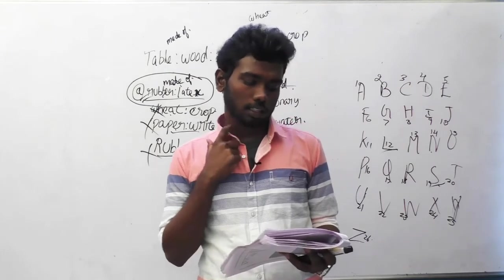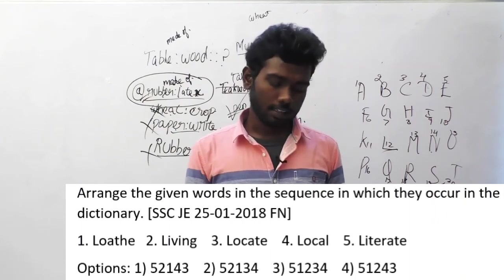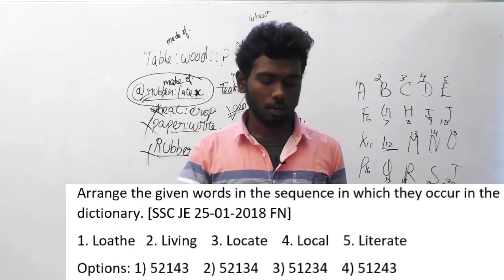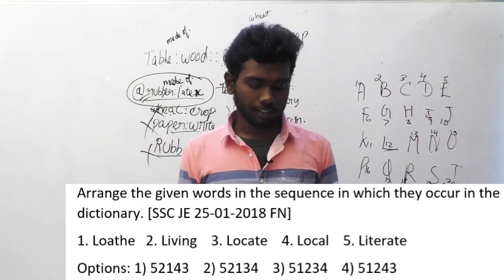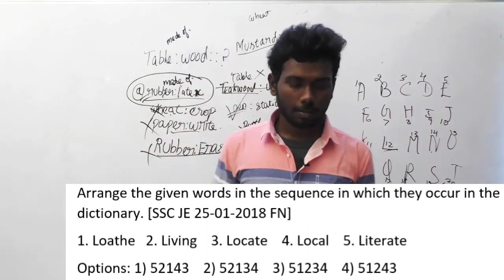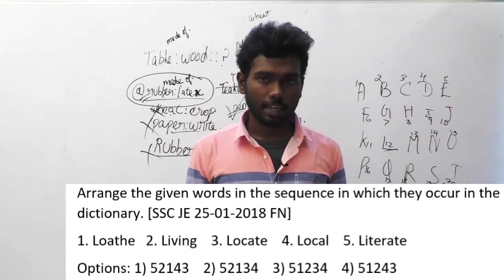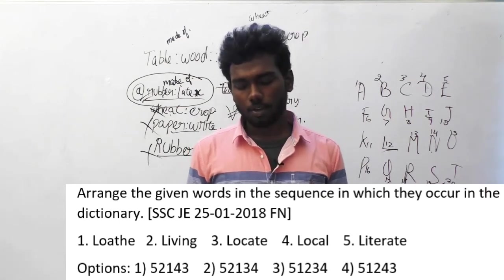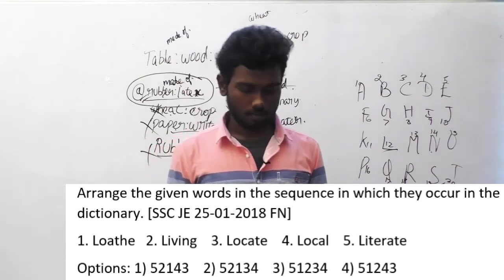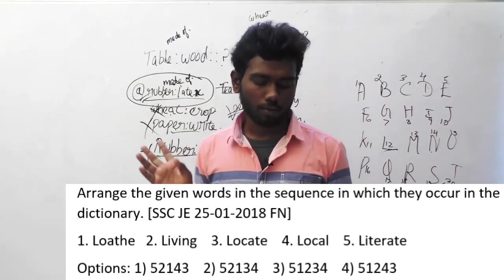Let us move on to question 136. Arrange the given words in the sequence in which they occur in the dictionary. This question is asked in SSC JE, 25th January 2018, forenoon session. The words are: loth, living, locate, local, literate. You can arrange them yourself — it is a very easy one. The answer is option A: 5, 2, 1, 4, 3.